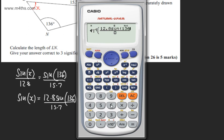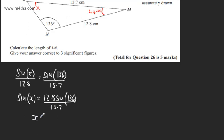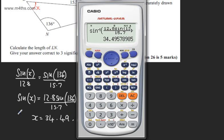Just plugging this in the calculator, divided by 15.7, gives me the value of X. We can see that's 34.495, so X equals 34.49 dot dot dot.